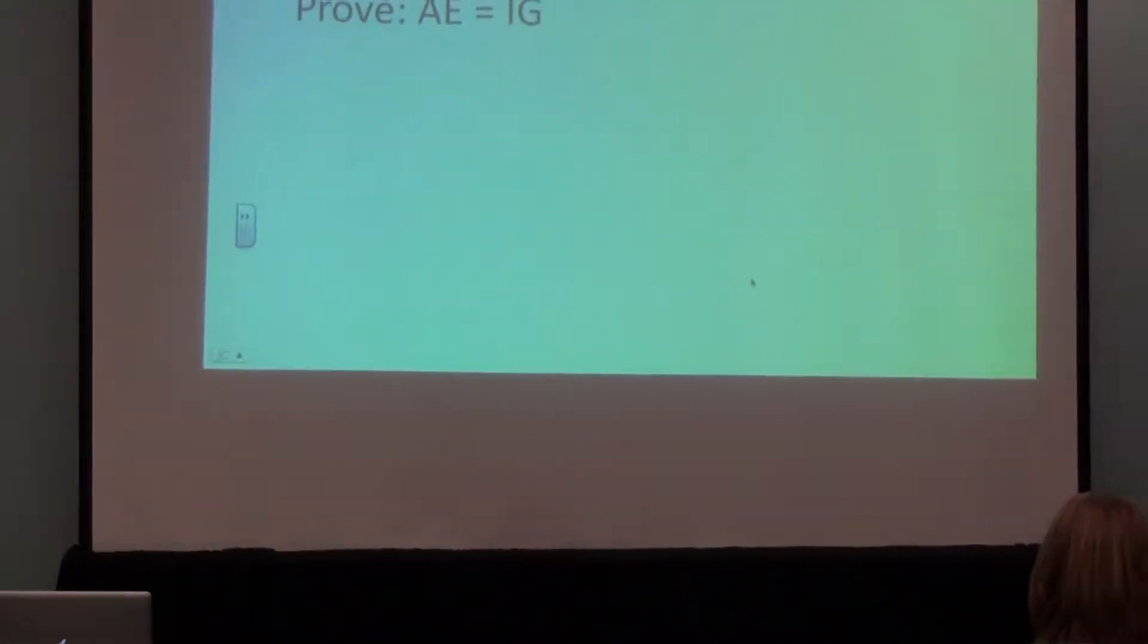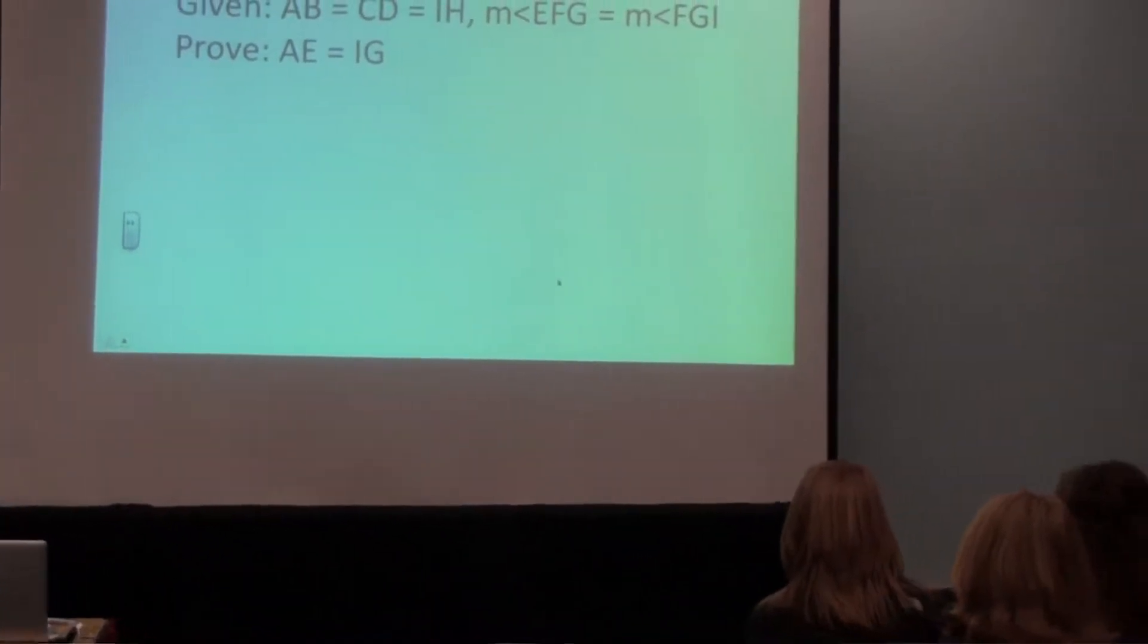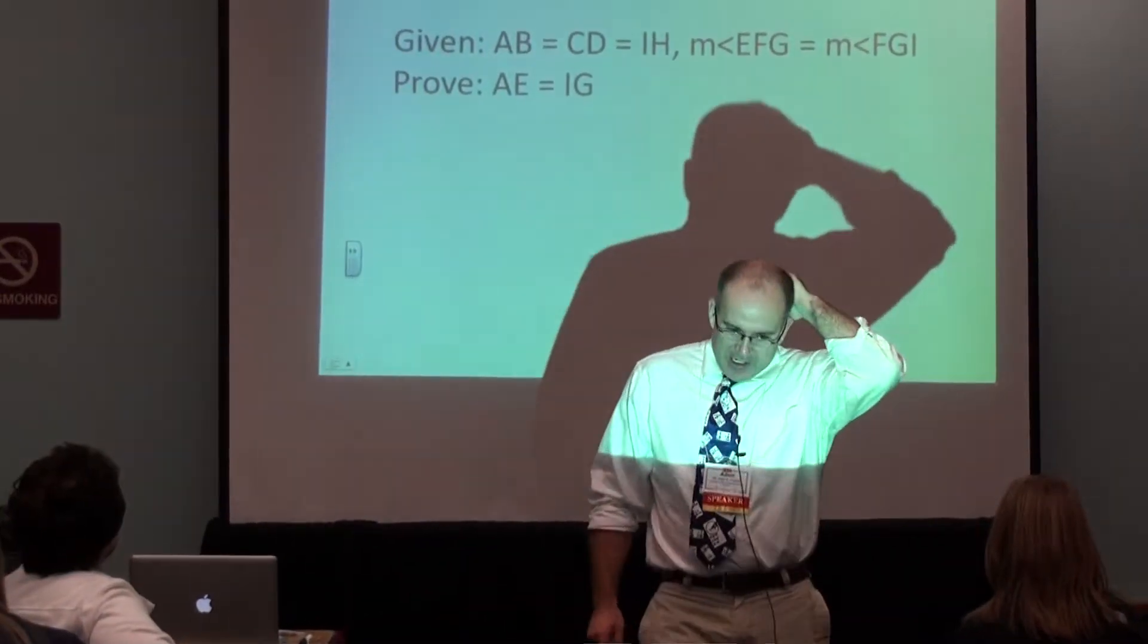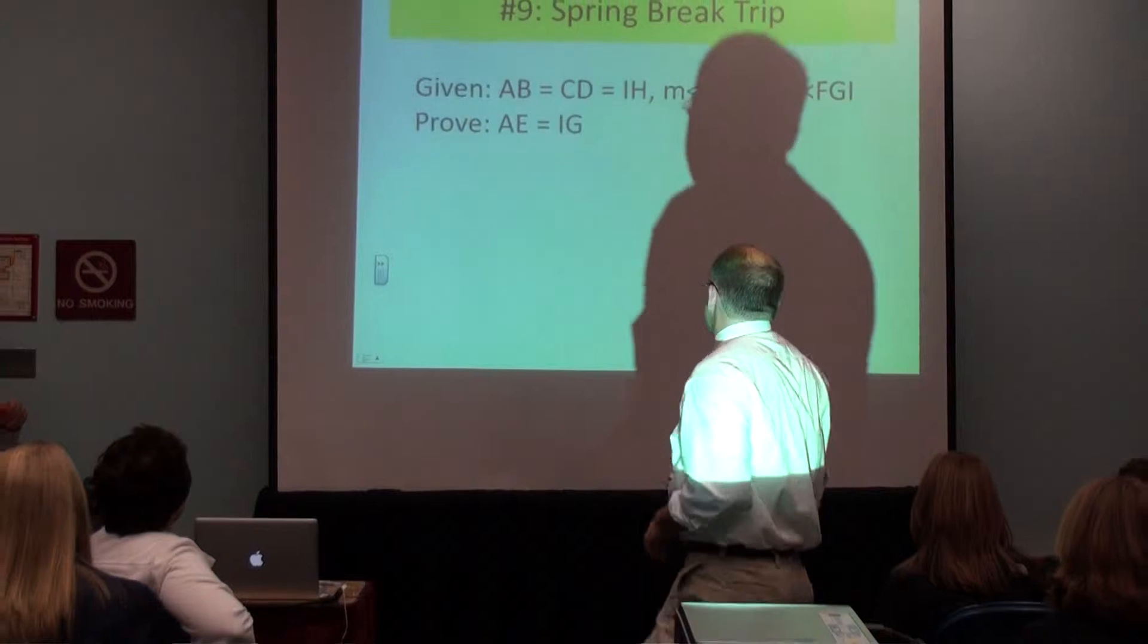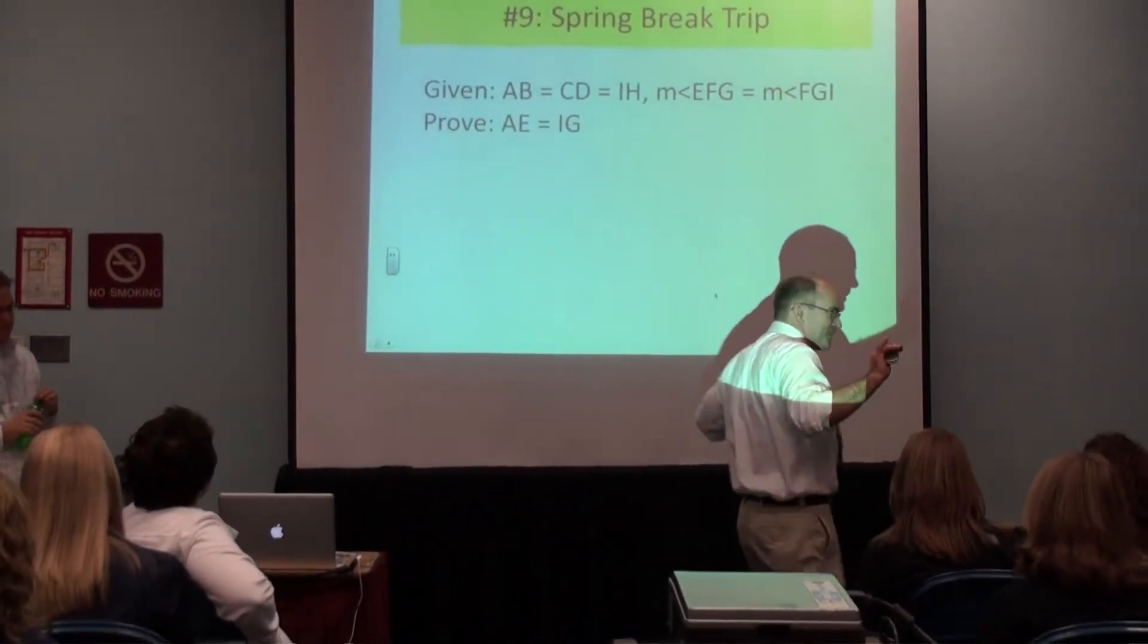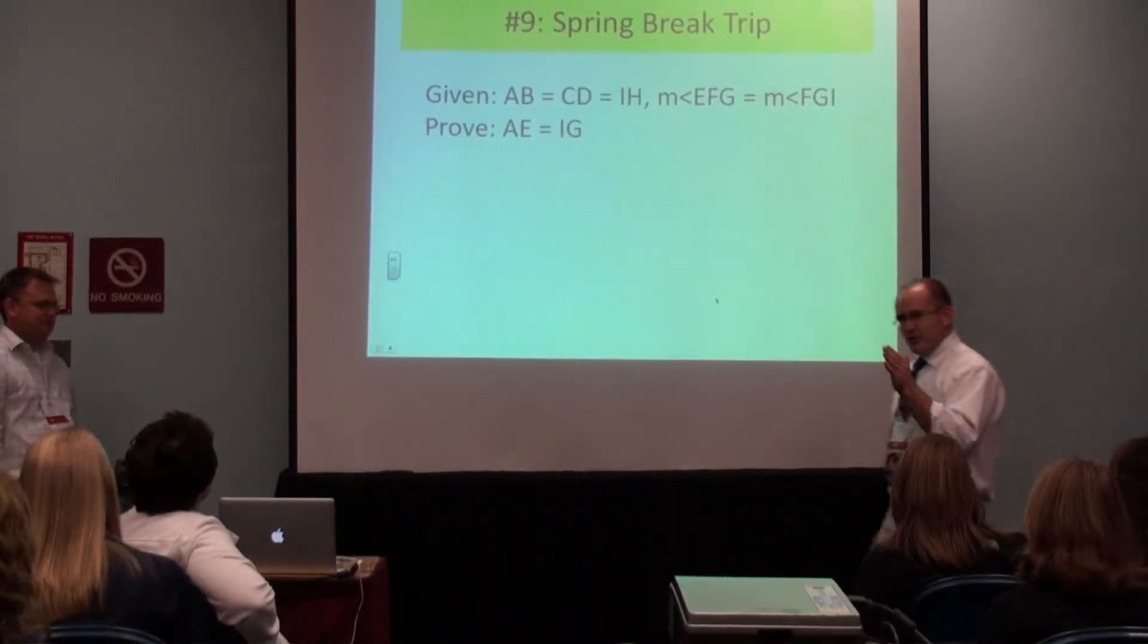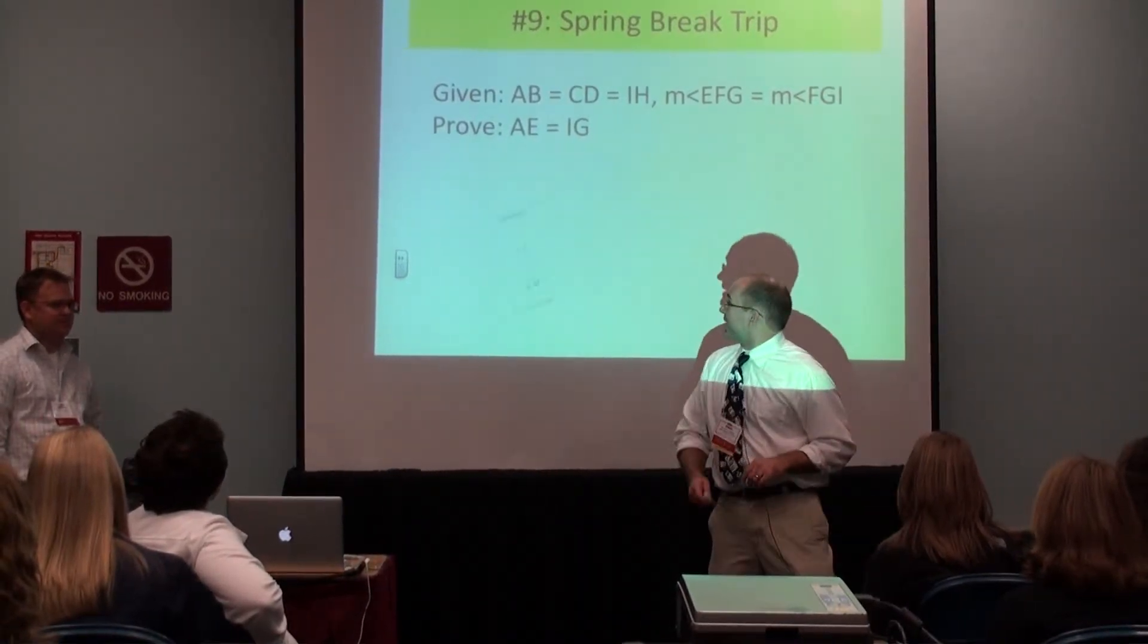All right. We got a tough one today, class. We got these triangles here. I got a challenge for you. These triangles may look like AE is equal to IG, but we've learned in math, you can't just make those assumptions. We need a solid proof to know for sure if AE is equal to IG.